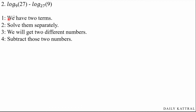We will solve the two terms separately. We have two terms: first is log base 9 of 27, and second is log base 27 of 9. We need to find two different values and then subtract them.